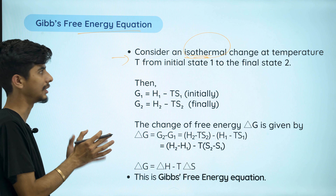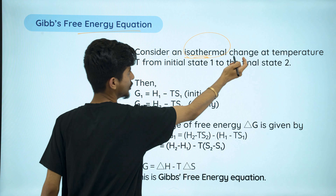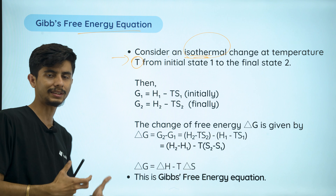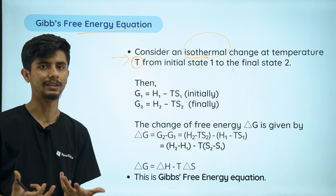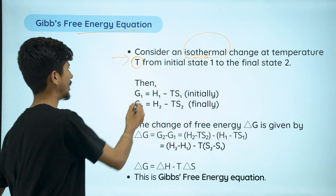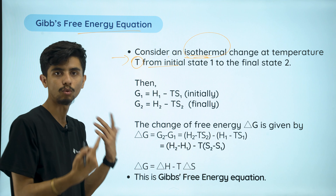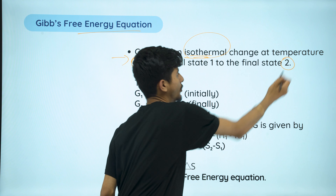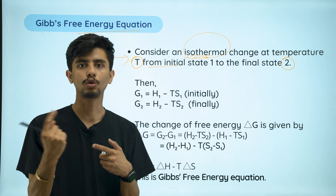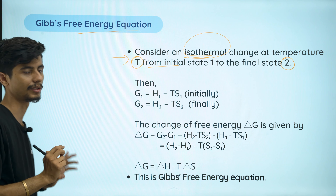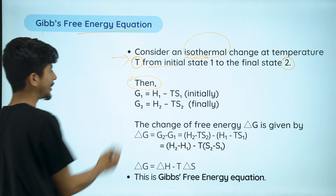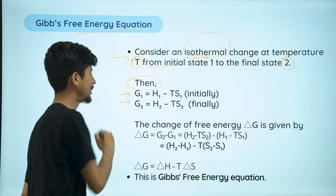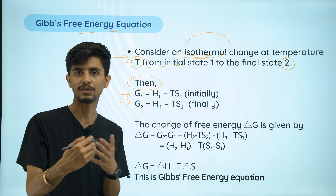Isothermal means constant temperature. If you consider an isothermal change at temperature T — isothermal — from initial state 1 to final state 2, the temperature does not change. Now, if you consider the equation for Gibbs free energy: G equals H minus TS.